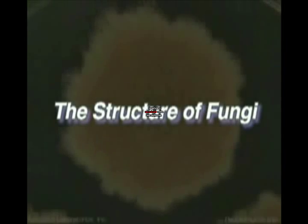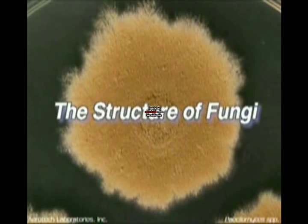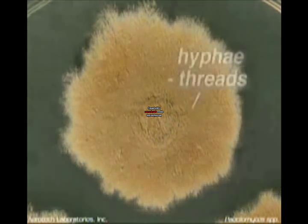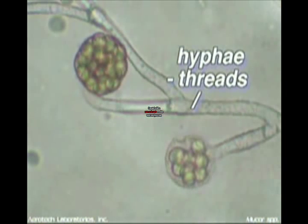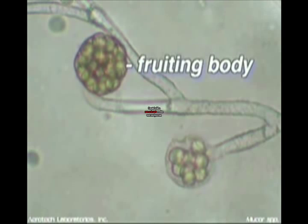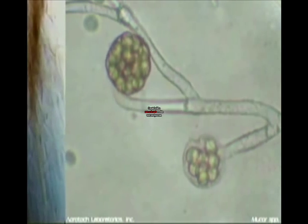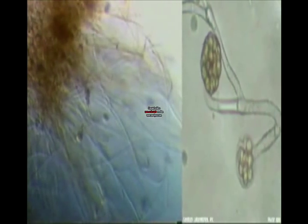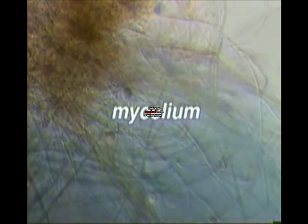Compared to the other kingdoms of living things, the basic structure of fungi is rather peculiar. The fungal body consists mainly of threads called hyphae that search out and digest food, and that can give rise to special organs used for spore production called fruiting bodies, like the microscopic example pictured here. Hyphae grow very rapidly from a single spore, and as they branch out, a tangled mass called a mycelium is formed.